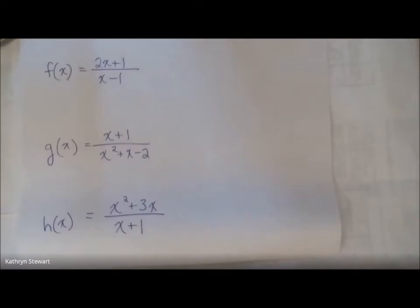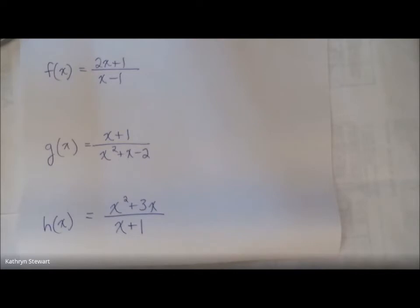Let's begin our discussion by looking at these three functions. Two of these functions have end behavior that would be described by a horizontal asymptote. One of these functions has end behavior that would be described by a slant asymptote. Pause the video and see if you can figure out which is which.